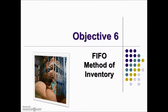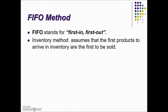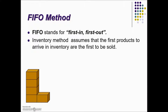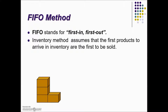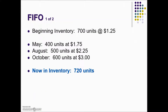Next we're going to use the FIFO method to find the value of inventory. FIFO is short for first in, first out. This inventory valuation method assumes a natural flow of goods through the inventory — the first goods to arrive are the first goods to be sold. So the last items purchased are the last items remaining in inventory. Let's take a look at calculating the inventory using the FIFO method.